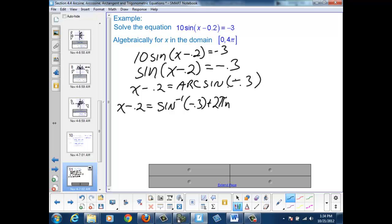And then I have a second solution, where x - 0.2 = π - sin⁻¹(-0.3) + 2πn.